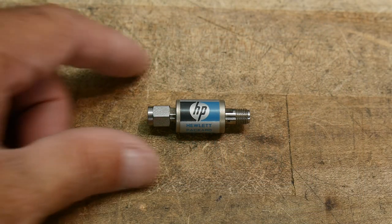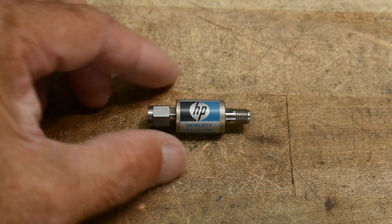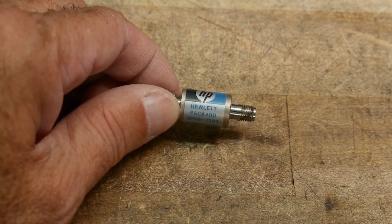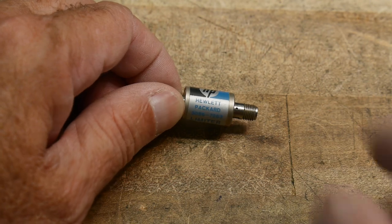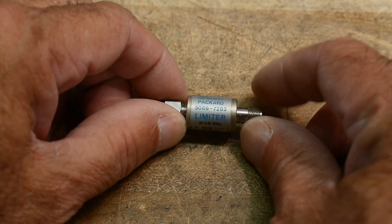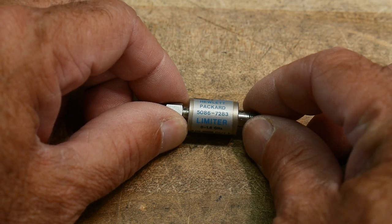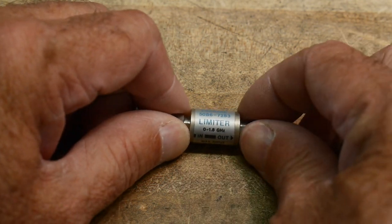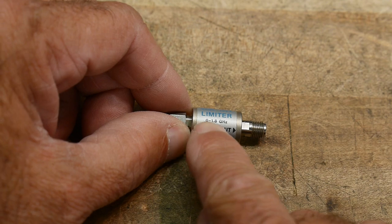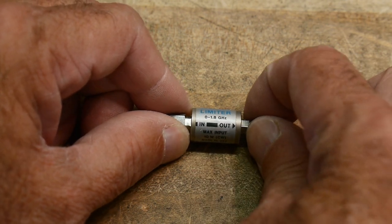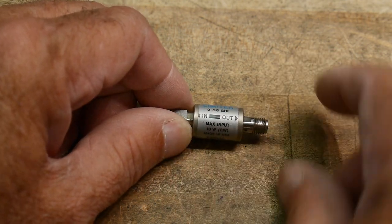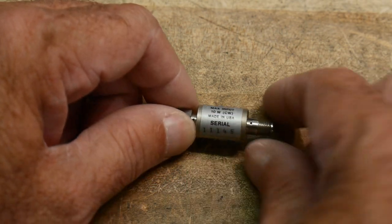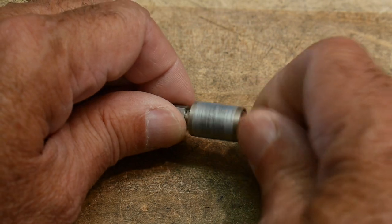So what's this? It obviously has HP on it, HP goodness. This is what's called a Hewlett-Packard 5086-7283 limiter. This particular limiter is good from DC to 1.8 gigahertz. There is an input port and an output port, and it says max input 10 watts, so this thing can handle 10 watts.